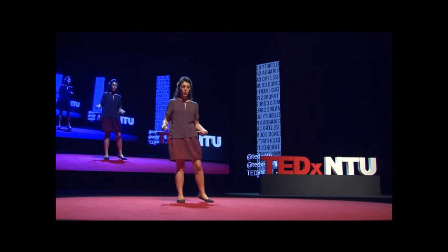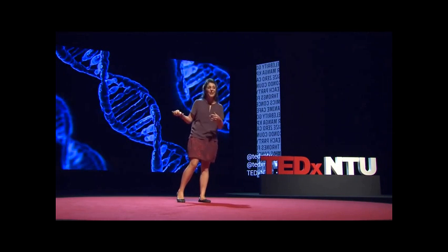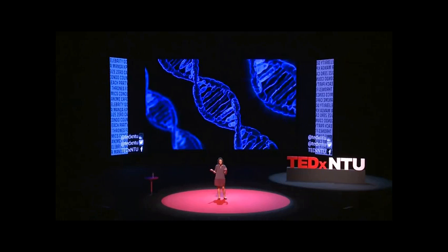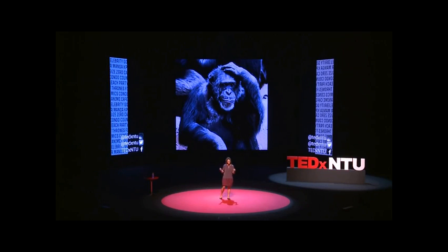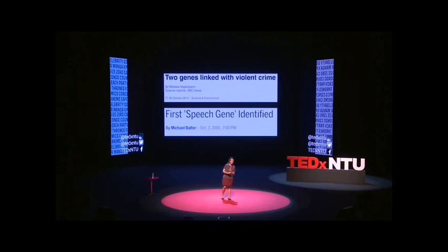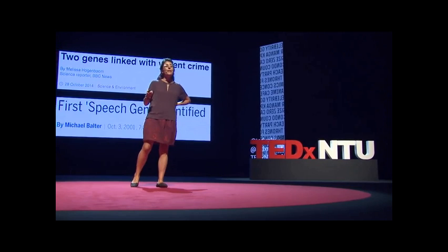I'm here today to talk to you about genes — and when I say genes, I don't mean the jeans you're wearing, but rather the genes you're carrying: your DNA. You might have heard that you share 99% of your genes with chimpanzees, our closest living relative — and that is absolutely true. You might have also heard that there is less DNA in each of your cells than in those of a humble onion — also true. And you might have heard that scientists have discovered the gene for things like crime, autism, cancer, beauty, or attraction. Well, I'm going to tell you that is wrong, and I'm going to tell you why.